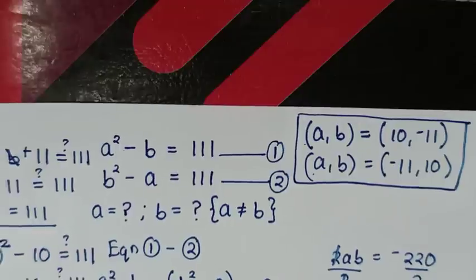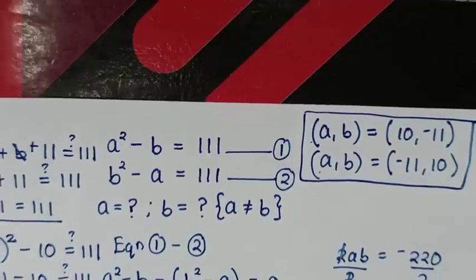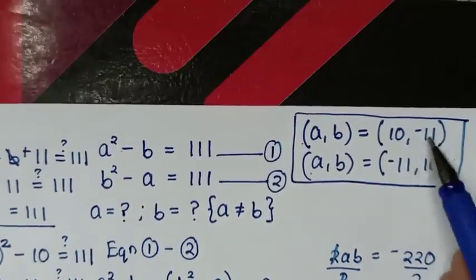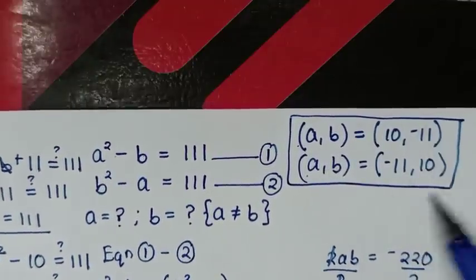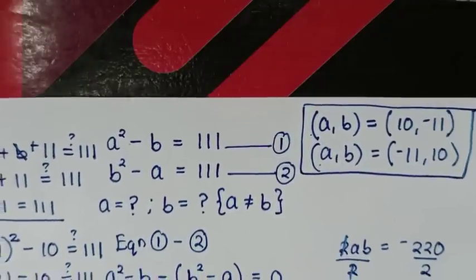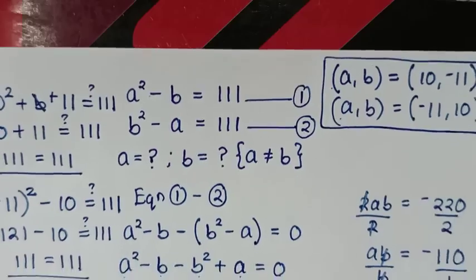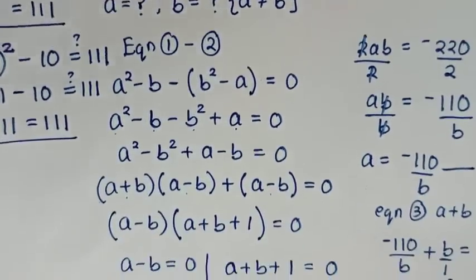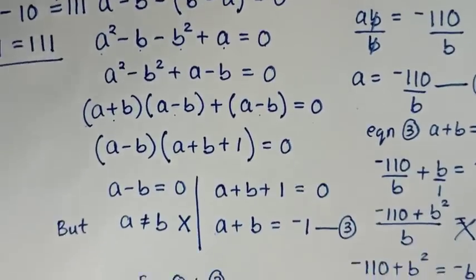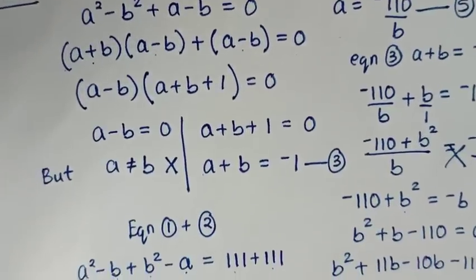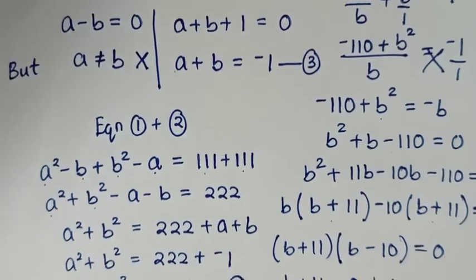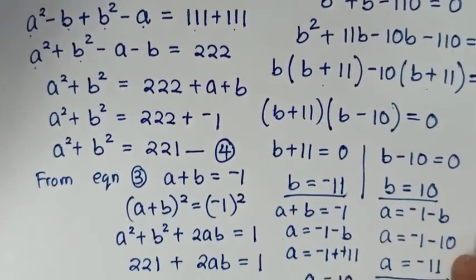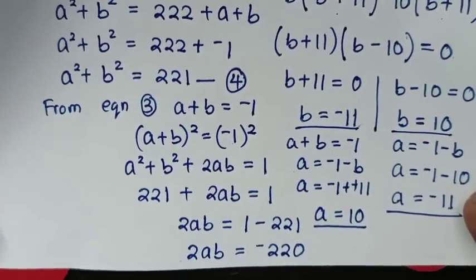So our final answer is (a, b) equals (10, negative 11) and (a, b) equals (negative 11, 10). Thank you for watching. Don't forget to subscribe to my channel and see you in the next video.